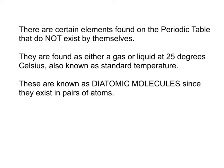There are certain elements found on a periodic table that do not exist by themselves. They are found as either a gas or a liquid, and this is always at standard temperature, which is about 25 degrees Celsius. These are known as diatomic molecules since they exist in pairs of atoms — 'dia' meaning 2, 'atomic' meaning atoms, so they are two atoms put together.